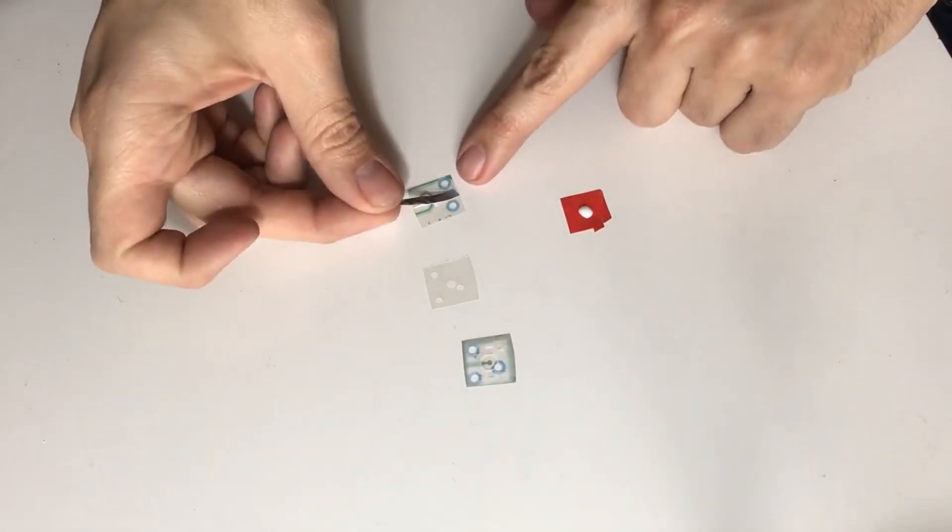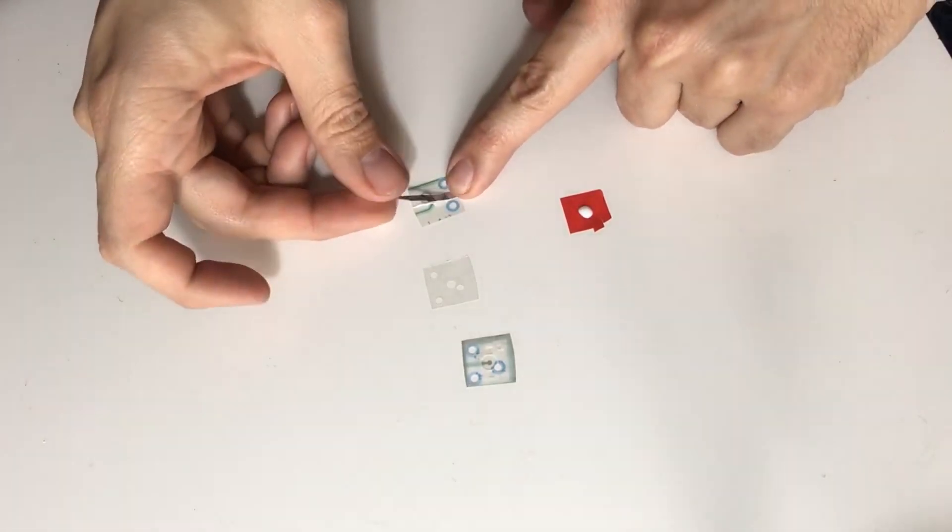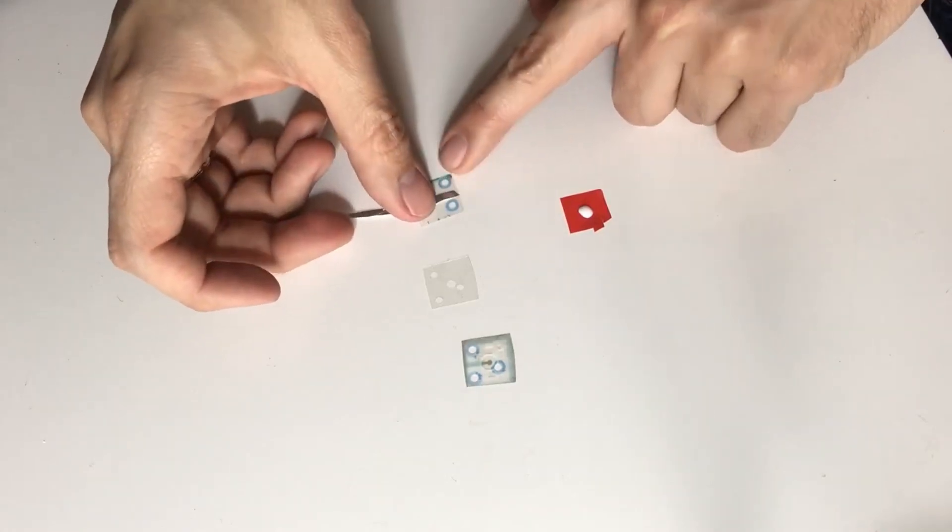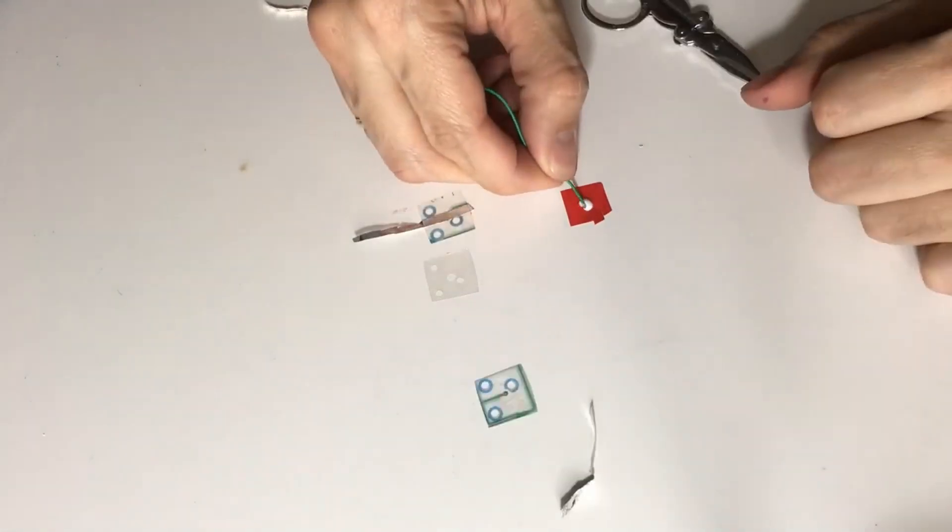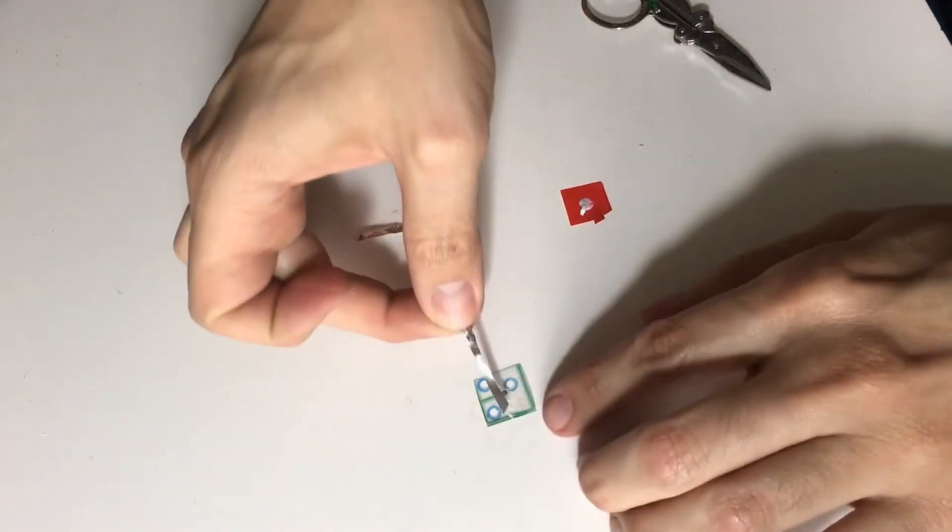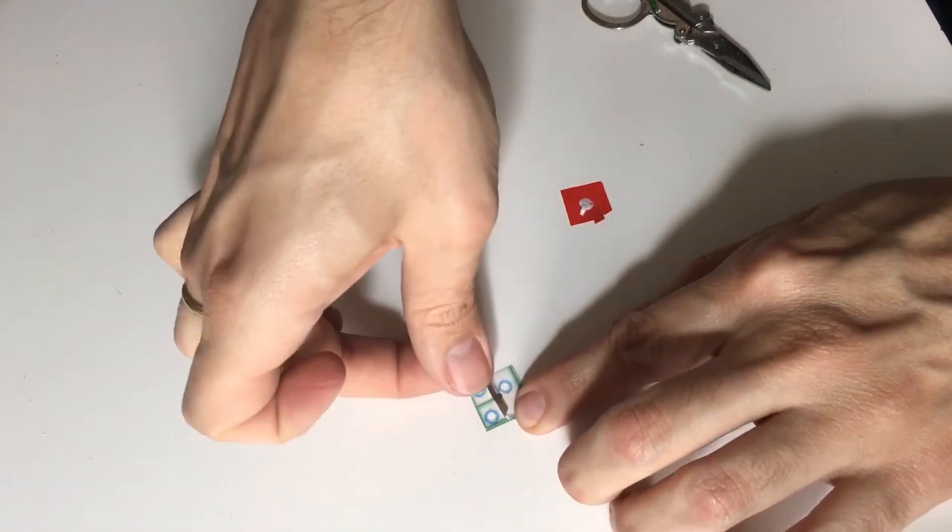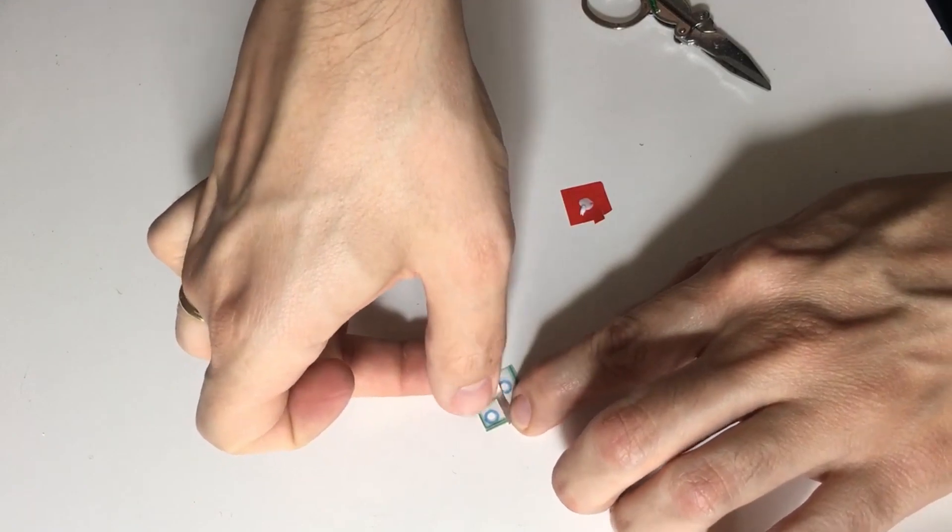I'll glue down the first piece of aluminum foil vertically over the membrane. The second piece of aluminum foil will be glued down horizontally over the membrane.